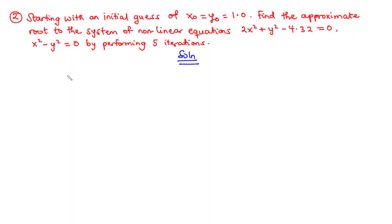We have two root-finding problems which we need to transform into fixed point problems. We are given the initial guess x0 equals y0 equals 1.0. Notice that in this example we are not given any possible arrangement, so we are going to find it ourselves — meaning we need to find j(x,y) ourselves. Because we want faster convergence, we are going to use the Gauss-Seidel iteration method.